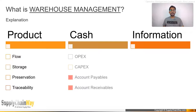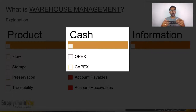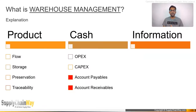In terms of cash, two key terms you should know are OPEX and CAPEX — operating expenditure and capital expenditure. Operating expenditure covers routine monthly expenses such as water bills, electricity, rent, and consumables. Capital expenditure covers investments such as a new warehouse management system or racking for storage. Both OPEX and CAPEX come under warehouse management under the head of cash.